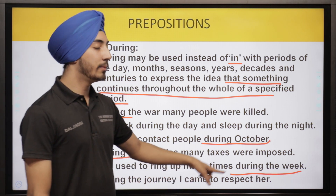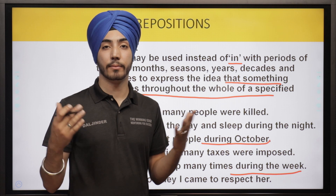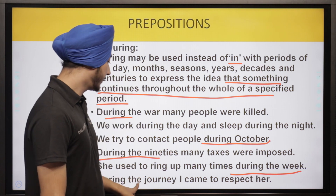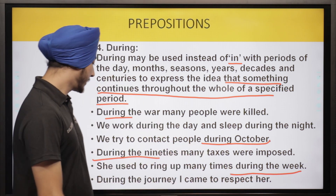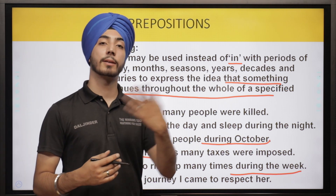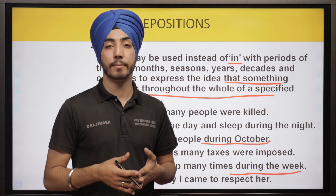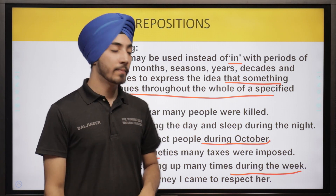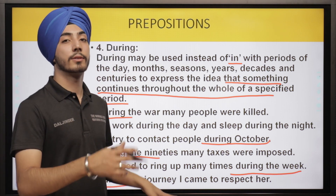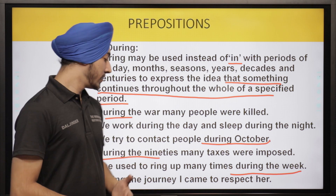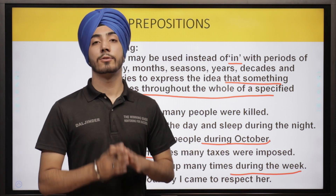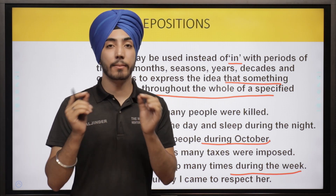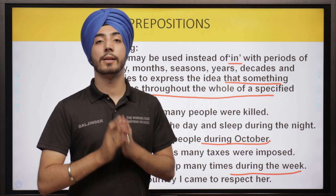'During the journey I came to respect her' — it's not a one-time event. It's a slow process; only after getting to know someone does respect develop. So during the journey — which could be for months — that gradual process happened. We use 'during' when an event continues throughout a time period and is not a one-time occurrence.